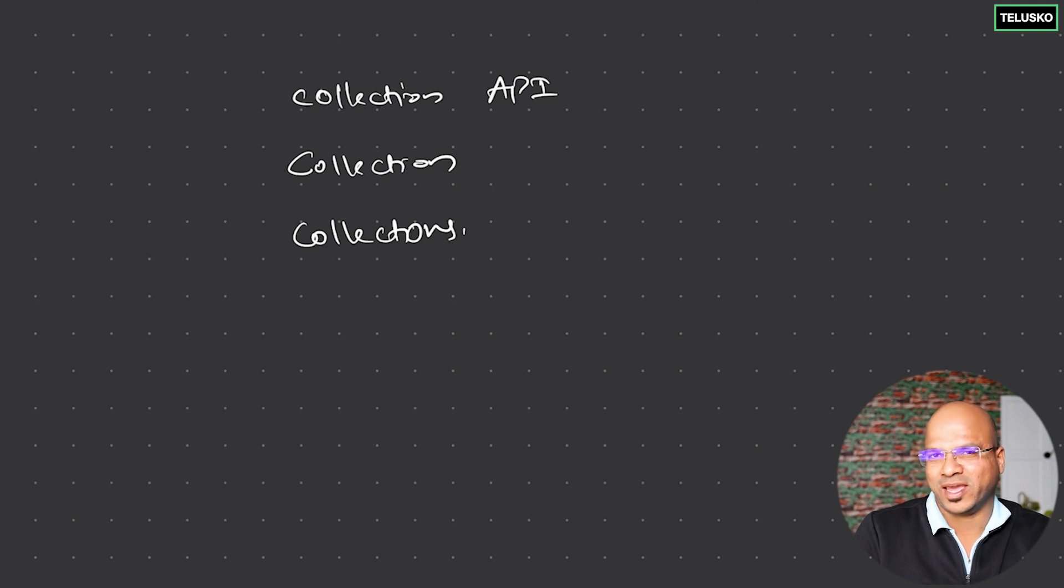Now this is the only thing I think is confusing in this topic. When I talk about Collection API, I'm talking about a concept. When we talk about Collection, I'm talking about an interface. And when you talk about Collections with 's', it is your class. So if I say something belongs to Collection API, that means it belongs to this concept. If I say Collection, I'm talking about the interface. And then there are some classes which implement this. And then I will talk about Collections, which is a class that has multiple methods to work with.